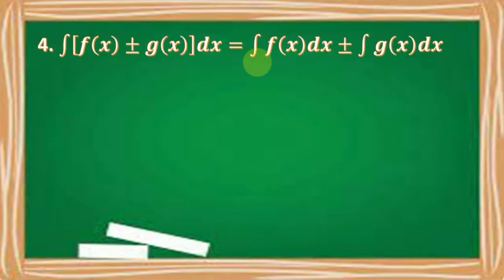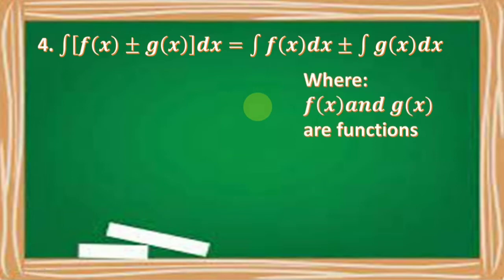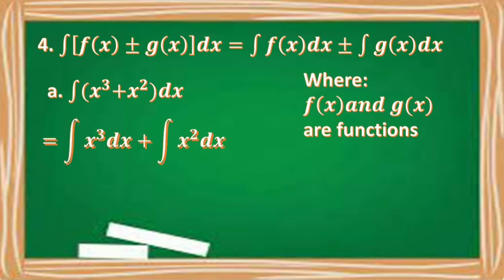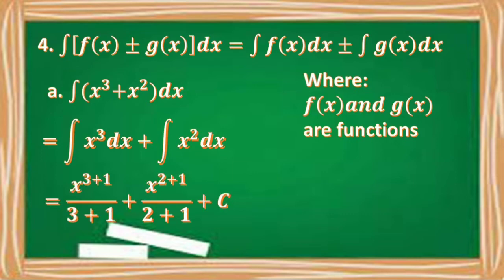The integral of the quantity f of x plus or minus g of x dx is equal to the integral of f of x dx plus or minus the integral of g of x dx. For example, the integral of the quantity x cubed plus x squared dx equals the integral of x cubed dx plus the integral of x squared dx, which is equal to x raised to 3 plus 1 over 3 plus 1, plus x raised to 2 plus 1 over 2 plus 1, plus C. This gives x to the 4th over 4 plus x cubed over 3 plus C.